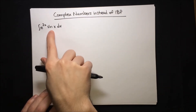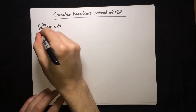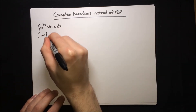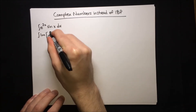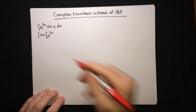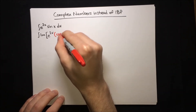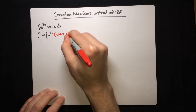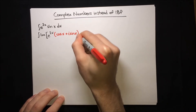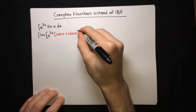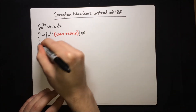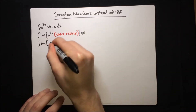To use complex numbers to solve this integral, we're going to start off by expressing the inside as the imaginary part of some number. We'll make that number e to the 2x times cos x plus i sin x. This way, we can simplify the inside a bit using Euler's formula.